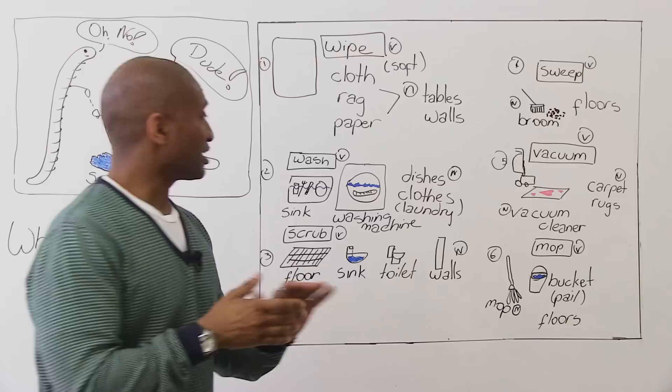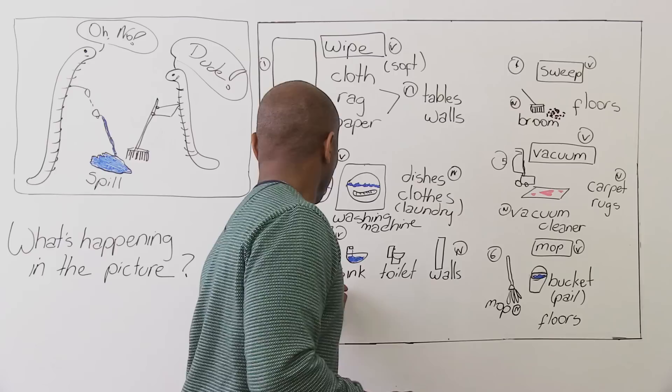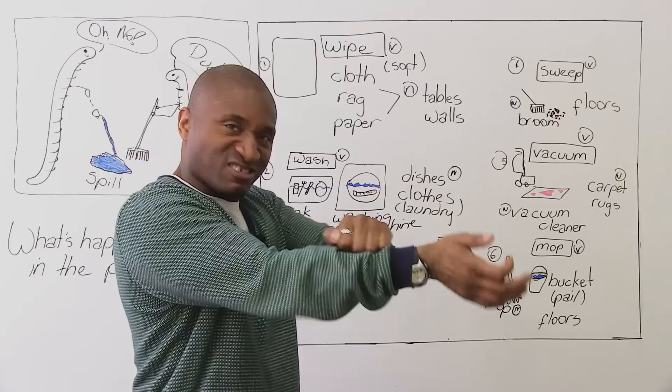Now, scrubbing. Scrub. Scrub. I'm missing something here. Oops. Pardon me. You scrub and it's hard. Remember I said when you use a cloth used for soft? Scrubbing is when you want to go really, really hard on something because it's hard to clean.